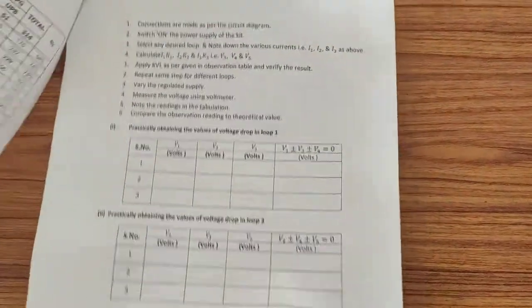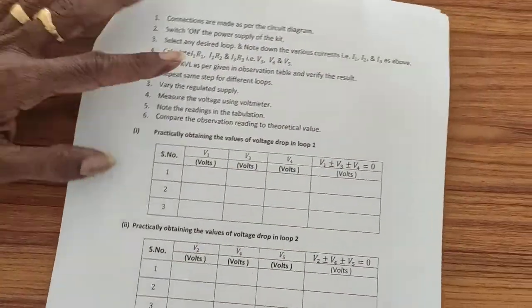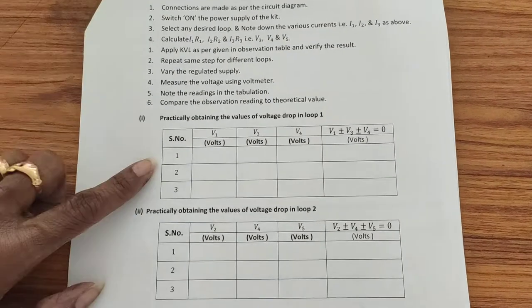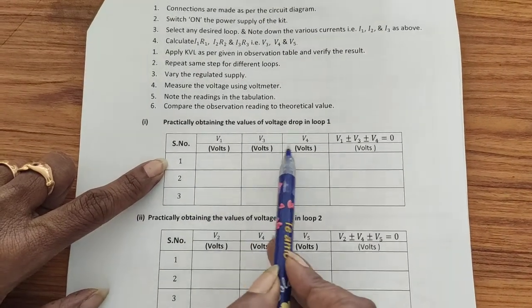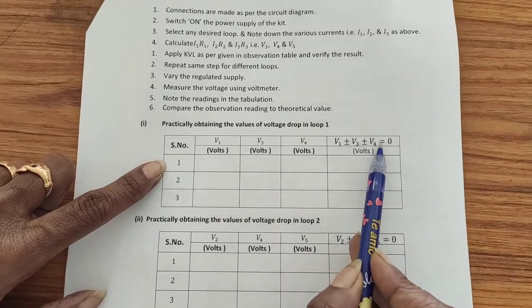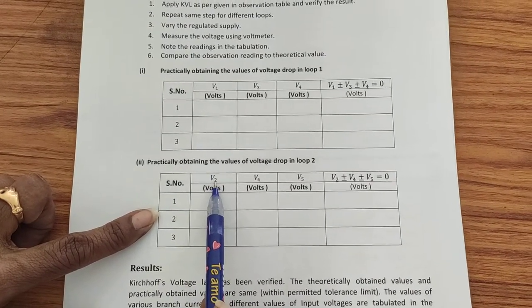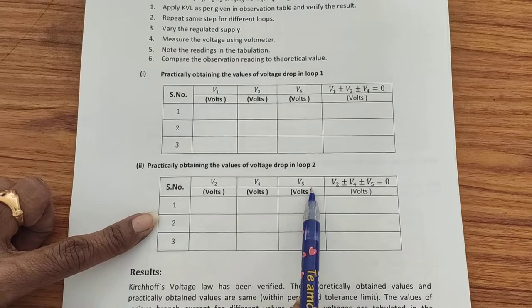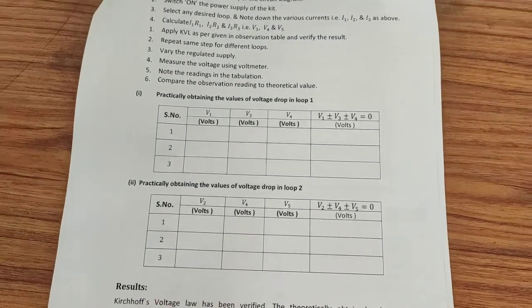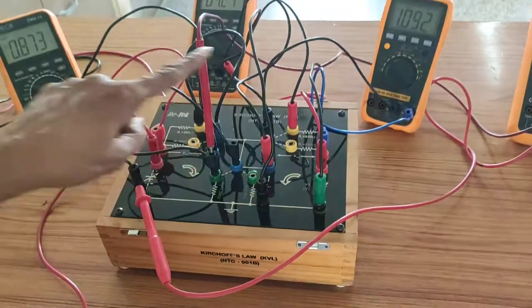Here is the observation table. We have V1, V3, V4 for loop 1 and for loop 2 we are considering three voltages V2, V4 and V5. We are going to measure all these voltages with these multimeters.